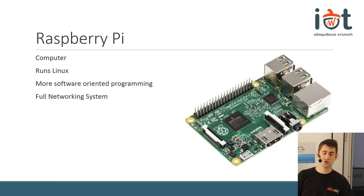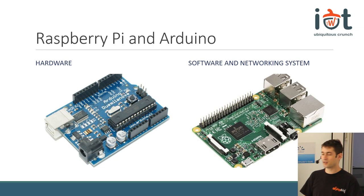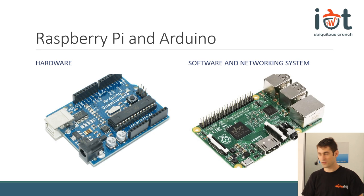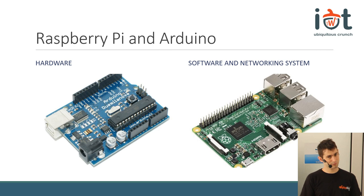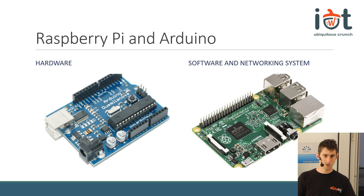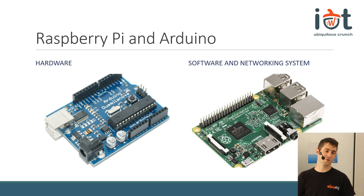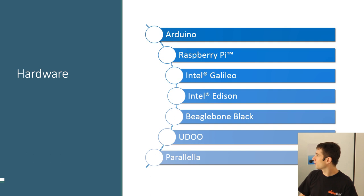The Internet of Things thing will be composed of some kind of device that combines these two. The hardware interface will be built with an Arduino-like device, because it can talk to sensors really easily. The networking connection will be built on top of something similar to the Raspberry Pi. The internet goes out through the networking connection. Keep in mind that these were the important steps in the Internet of Things.